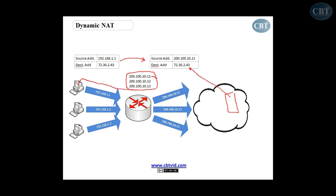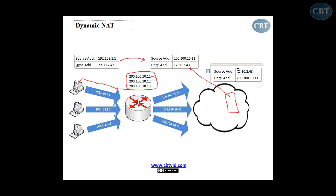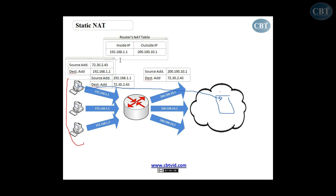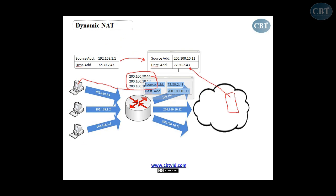The source address will change to 200.100.10.11. This address has come from our pool. It goes out, and the story is the same as Static NAT. When the server receives the packet, it looks at the packet, sees the destination address is itself and the source address is this computer. When it wants to reply back, the source will be the address of the server, and the public IP address will be the destination. The packet comes all the way back to the router, which has the same NAT table — registering what IP address for inside and what IP address for outside. The same NAT table will be here for Dynamic NAT as well.